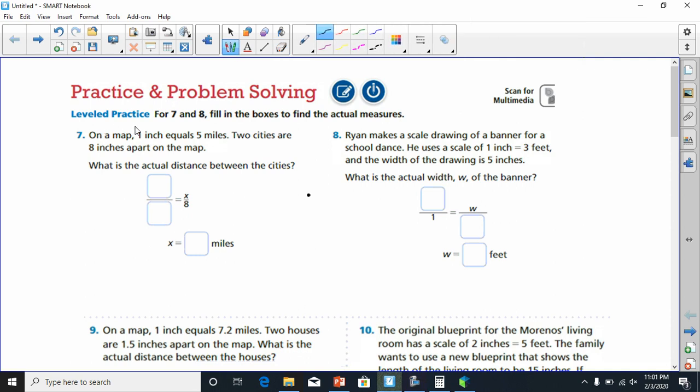Number 7 says, on a map, 1 inch equals 5 miles. Two cities are 8 inches apart on the map. What is the actual distance between the cities? Well, if 8's on the bottom here, that indicates the inches are going to be placed at the bottom. So when it says 1 inch equals 5 miles, I know I'm going to put 1 inch on the bottom. That's equal to 5 miles on top. So, when we cross multiply, we see we've got 1 times x, which is x, and 5 times 8, which is 40. So, this would be 40 miles.